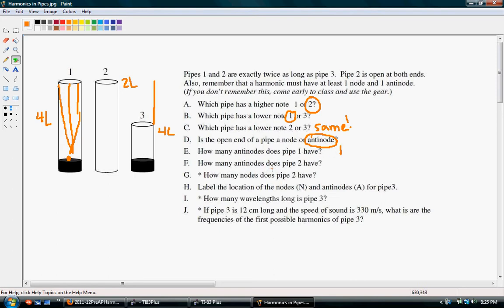How many anti-nodes does pipe 2 have? Well, because it's an open pipe, it's going to have anti-nodes on both ends and one node in the center. So for a closed pipe, you have to have at least one node, one anti-node. For an open pipe, you have to have at least one node, but two anti-nodes.